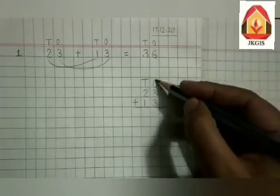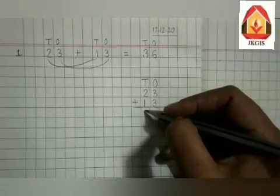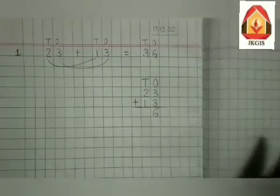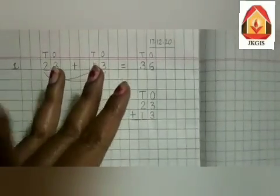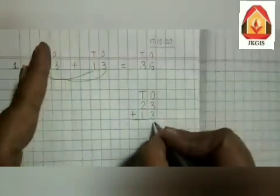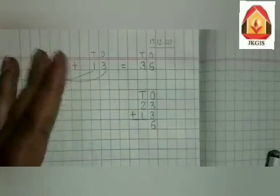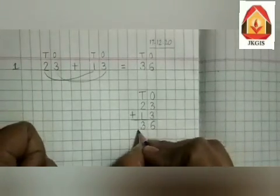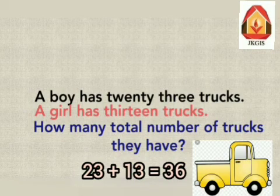Again, we will first add the numbers on 1's place. 3 plus 3 is equal to 6. We can also add 3 plus 3 by keeping 3 in our mind and counting 3 on our fingers: 3, 4, 5, 6. Then we will add the numbers on 10's place: 2 plus 1. Keep 2 in mind and 1 on finger: 2, 3. So 2 plus 1 is equal to 3. Again the sum is 36. This is the horizontal way and this is the vertical way. Total number of trucks are 36.